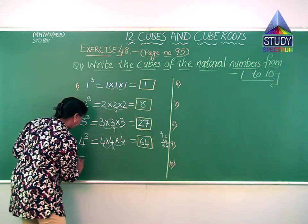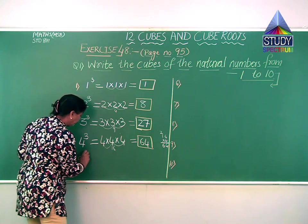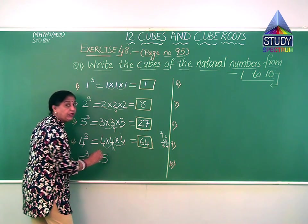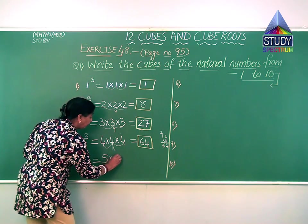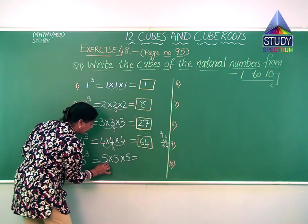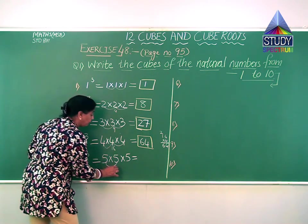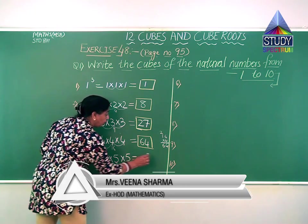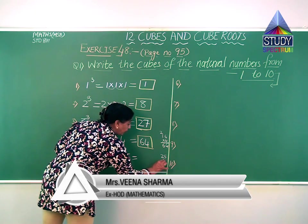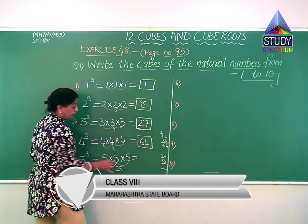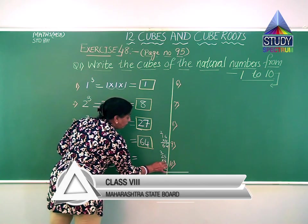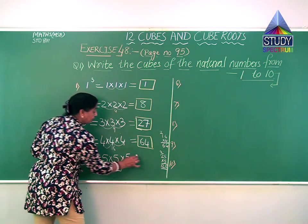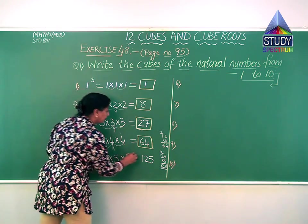The next number is 5. We have to find the cube of 5, so I write the power as 3. Working: 5 into 5 is 25, carry 2. Then 5 fives are 25, 25 into 5: 5 twos are 10, 10 plus 2 is 12. So the cube of 5 is 125.